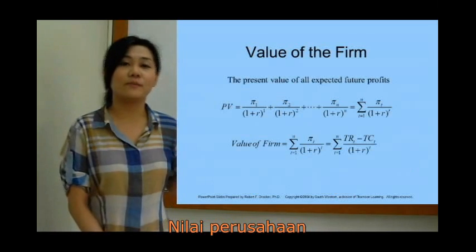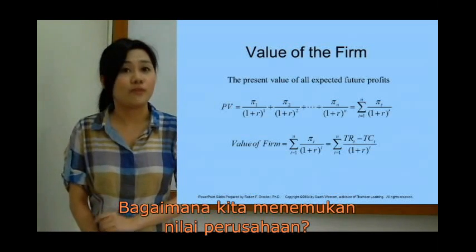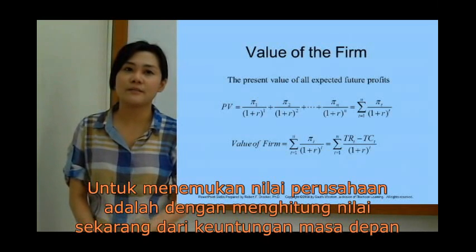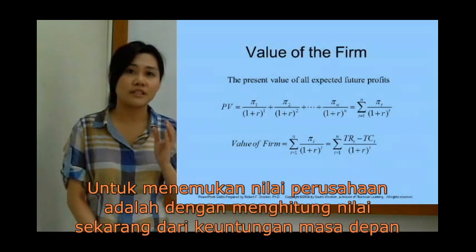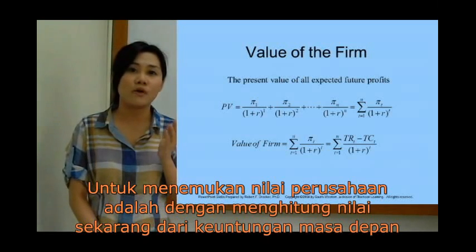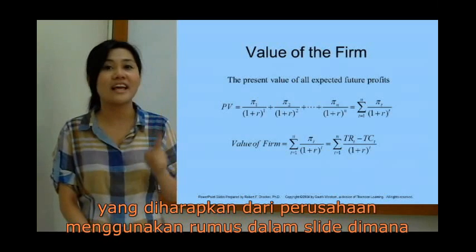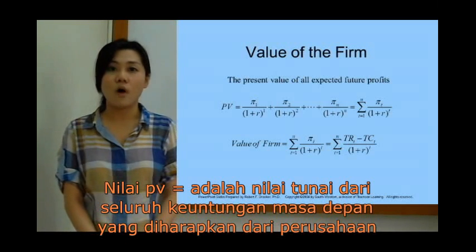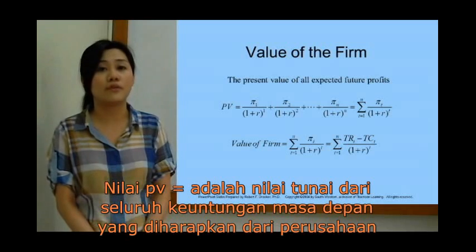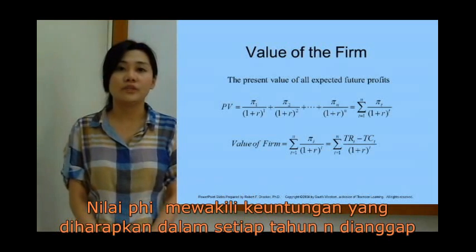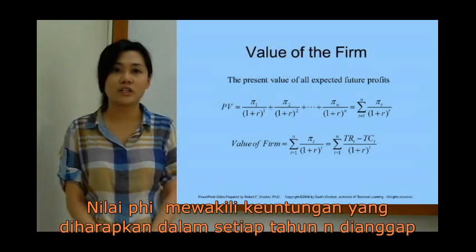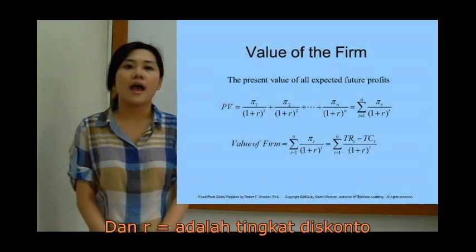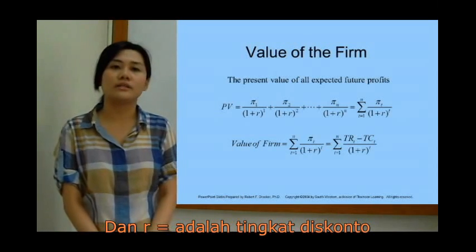How do we calculate the value of the firm? The value of the firm is found by calculating the present value of the expected future profit of the firm using the formula in the slide. PV is the present value of all expected future profit of the firm. V represents the expected profit in each of the end years considered, and R is the discount rate.